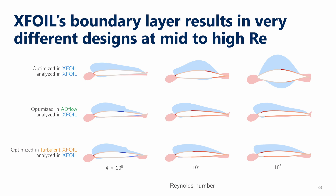At the moderate Reynolds numbers, we see a very big difference between the design optimized in XFOIL and the designs from ADFLOW and turbulent XFOIL. XFOIL uses a much larger thickness to delay transition, whereas the ones in ADFLOW and turbulent XFOIL have transition occur much further forward. At the highest Reynolds numbers, we see something we actually didn't expect: the XFOIL design ends up with a really thick airfoil that's still able to delay transition. The designs optimized in ADFLOW and turbulent XFOIL have transition locations that are almost at the leading edge. This really huge thickness in the XFOIL design might not occur if we add a moment constraint or a multipoint design problem.